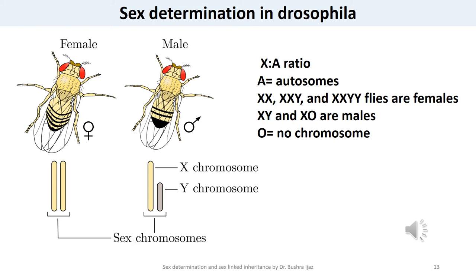Drosophila sex determination also differs from mammalian sex determination in several other ways. First, sex determination begins immediately at fertilization with no indifferent period. Furthermore, hormones are not responsible for sex-specific traits. Instead, each cell in the embryo senses the ratio of X chromosomes to autosomes, which triggers either female or male-specific patterns of transcription. Microarray experiments indicate that sex-specific differences in gene expression are quite extensive — roughly 30% of Drosophila genes show sex-specific bias in their expression.